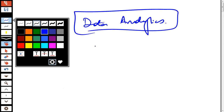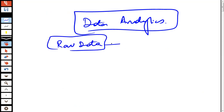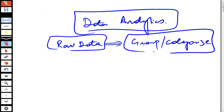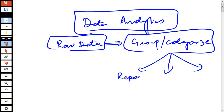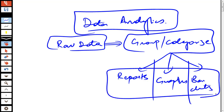When we talk about data analytics, it is simply when you have got the raw data and you group that data, categorize that data, and extract information from it. You generate various types of reports, graphs, bar charts, and so on — that is what is generally considered to be data analytics.